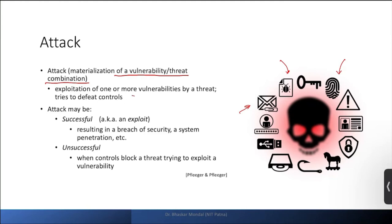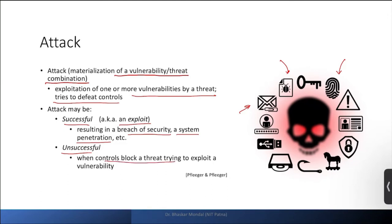Exploitation of one or more vulnerabilities by a threat tries to defeat controls. Attacks may be successful or unsuccessful. If successful, we call it an exploit — it can result in breach of security, system penetration, etc. If unsuccessful, it means the controls blocked the threat trying to exploit the vulnerability. Controls can include a good intrusion detection system, firewalls, and proper configuration with up-to-date security software.